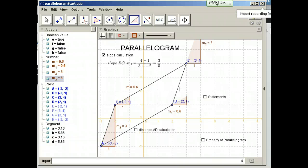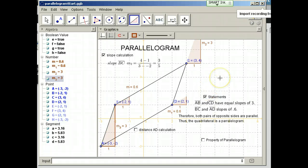So what have I proven here? I've proven that segments BC and AD both have slopes of 0.6. That AB and CD have slopes of 3.